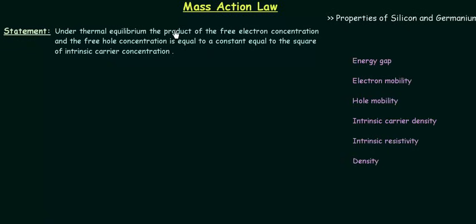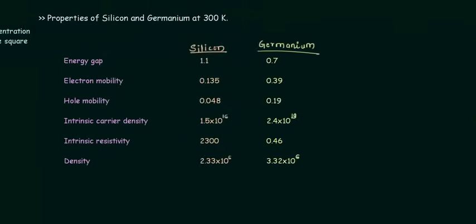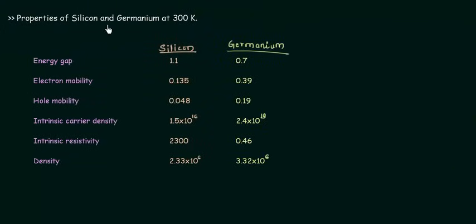In this presentation we will study mass action law in semiconductors, but before that you need to write down the properties of silicon and germanium at 300 Kelvin, that is the room temperature. On the left hand side you can see the properties and corresponding to these properties I have written the values for silicon and germanium. Like energy gap: we have 1.1 electron volt for silicon and 0.7 electron volt for germanium.